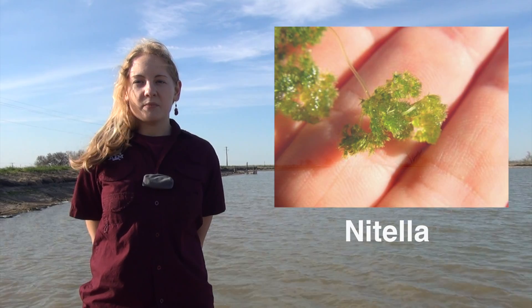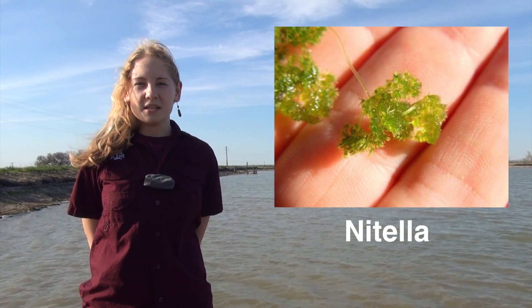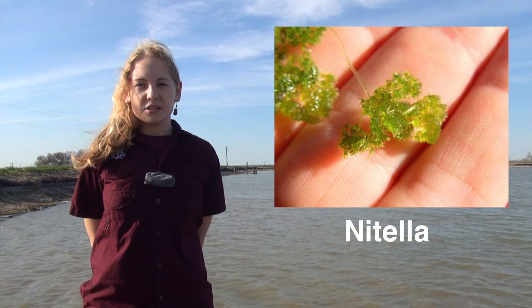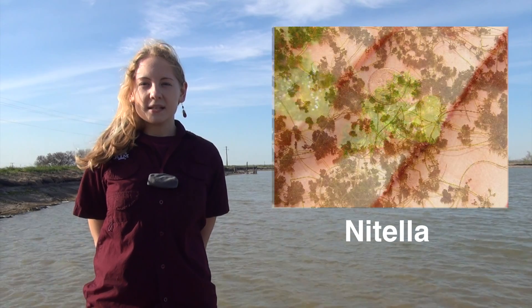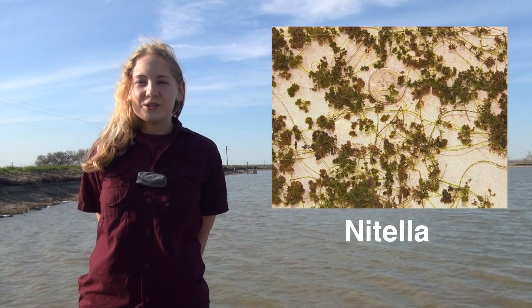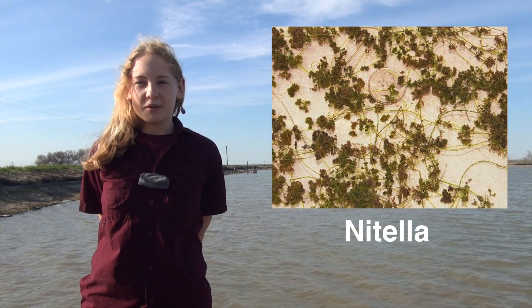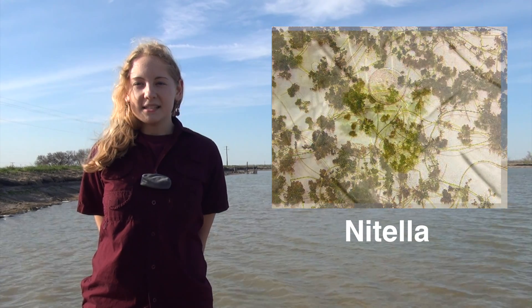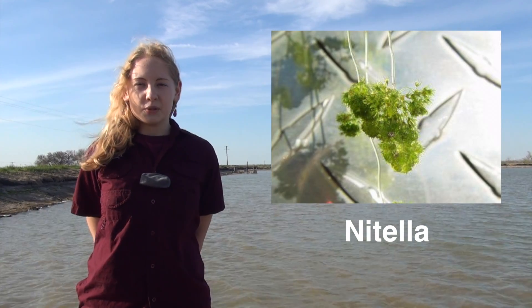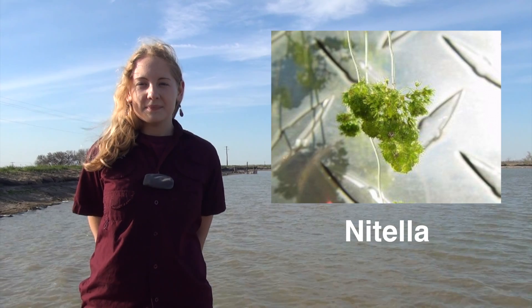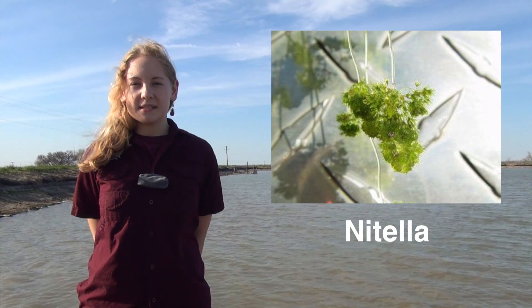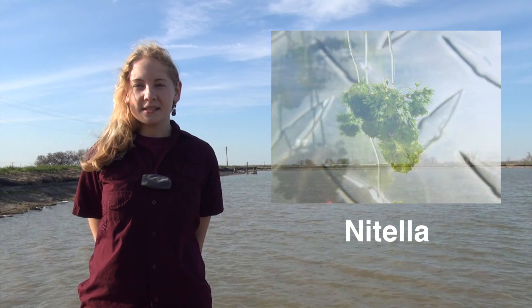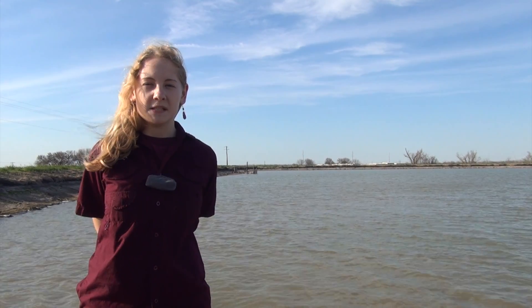Nitella is another type of multicellular macroalgae that is branched, does not produce a flower, and does not extend above the water surface. Also known as stoneworts, this algae has no odor, is soft to the touch, and is light to dark green in color with forked, bushy branches. Like Chara, it grows attached to the muddy bottoms of calm waters, and is undesirable because it can carpet the bottom of the pond and crowd out other desirable species.